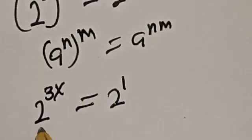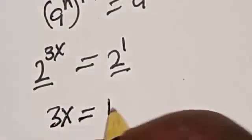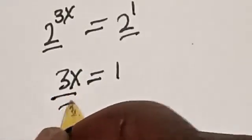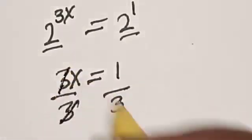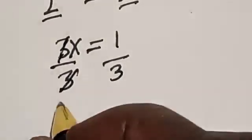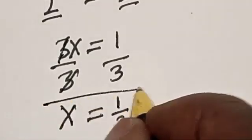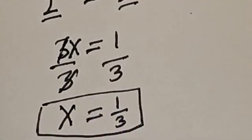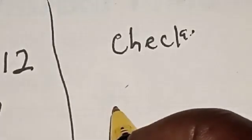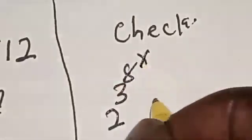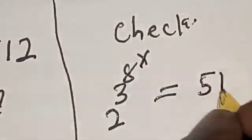Applying that rule, 2 raised to power 3x is equal to 2 raised to power 1. They have the same base, so we are left with 3x is equal to 1. Dividing both sides by 3, we get x is equal to 1 over 3. That is the value of x. Let's check to confirm if our answer is right — substituting back into the given equation: 2 raised to power 3 raised to power 8 raised to power x is equal to 512.